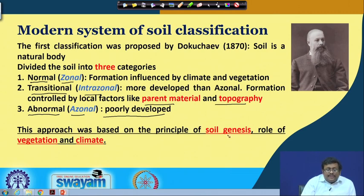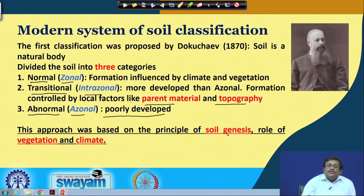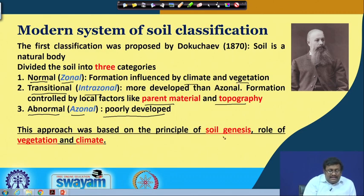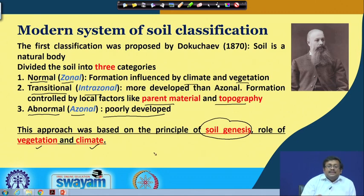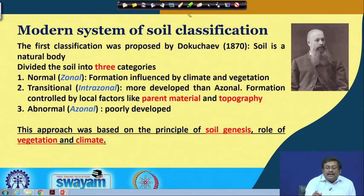Dokuchev divided soil into three categories, and his classification was based on climate and vegetation — essentially based on soil formation. That is why it is called the genetic system of soil classification. The role of vegetation and climate was very much important, and that is why the system given by Dokuchev was known as the genetic system of soil classification.